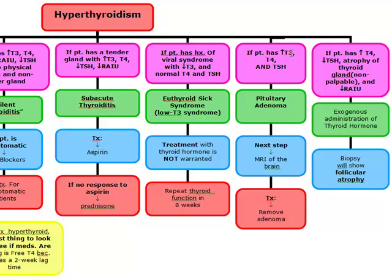If the patient has an increased T3 and an increased T4 but also an increase in their TSH — TSH comes from the pituitary — so if they have an increase in TSH with an increase in T3 and T4, this is a pituitary adenoma. Our next step is going to be MRI of the brain, and we're going to remove the adenoma.